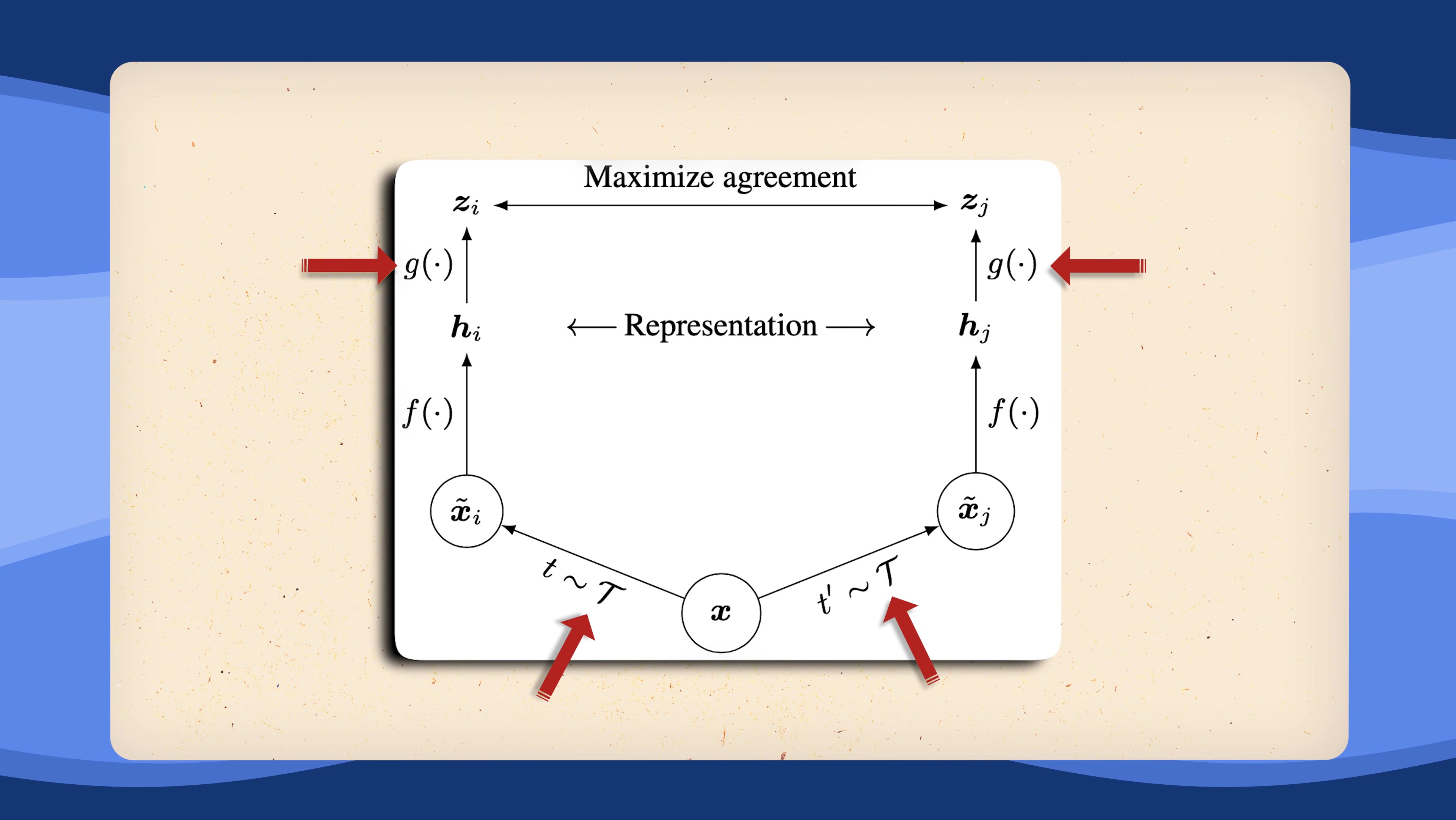Additionally, this framework is very sensitive to the set of augmentations we apply and how large the batch sizes during training. Why is the batch size so important? Well, because all the negative samples used in our contrastive loss, by design, come with our batch.